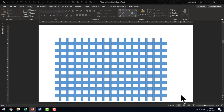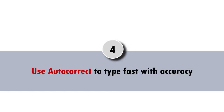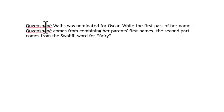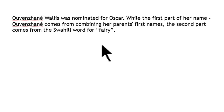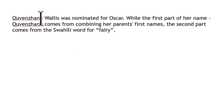The next trick is to use the auto-correct option to type fast with accuracy. Take a look at this text — it says Quevenzane Wallace was nominated for an Oscar, and the name Quevenzane appears quite a few times in the paragraph. When you have to write a difficult name like this over and over, it can be painful in terms of time and the possibility of making spelling mistakes. Using auto-correct can really save on a lot of time and agony while typing complex names.